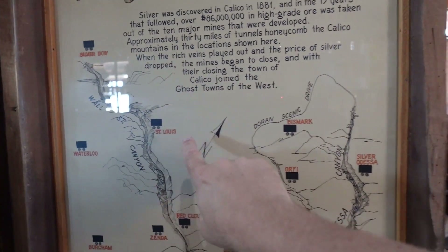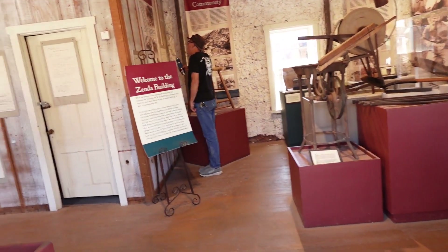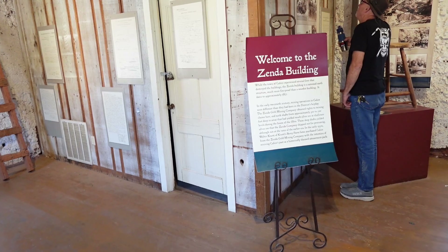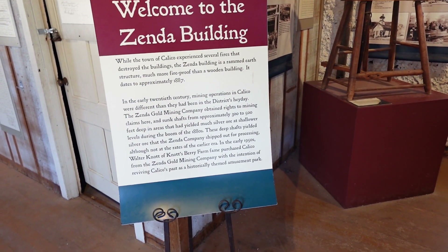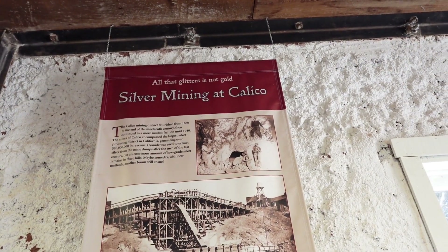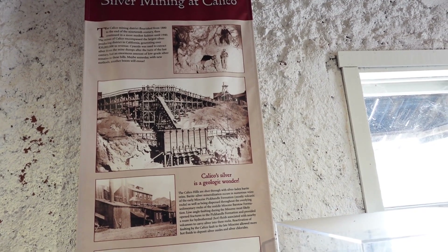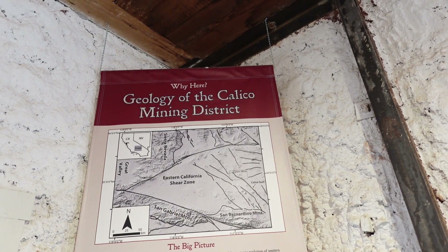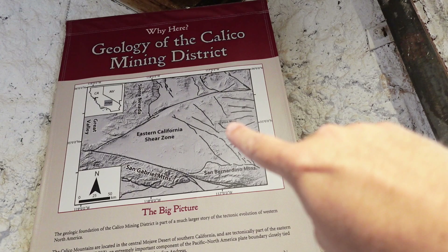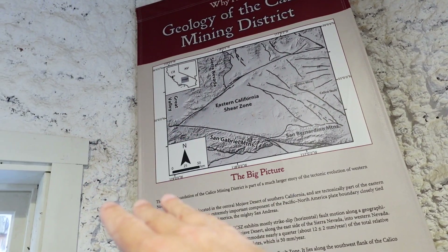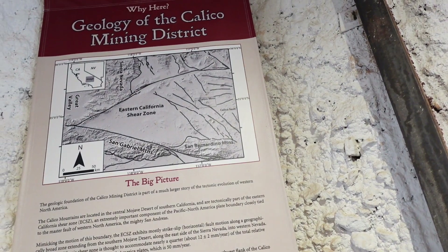Each of these mine areas would have a group that either lived nearby or worked in and out. Inside one of the original buildings — the Zinda Building, dating to 1887, home of the Zinda Gold Mining Company — there are banners describing how mining was done. There's a geology display of the Calico mining district showing we're right along the Calico fault, a right-lateral strike-slip fault that starts branching in this area.